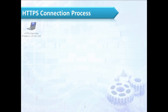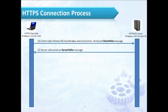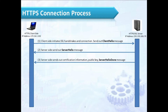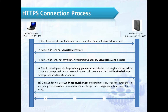Here, we can see the HTTPS connection process. First, the client side initiates an SSL handshake and sends out a client hello message. The server then sends a server hello message to inform the client that it is able to communicate, and then sends certificate information, a public key, and a server hello done message. The client will generate a private key, pre-master secret, and encrypt the public key sent by the server side. The client will then accommodate the private key in client key exchange, and finally send it back. The client and server will then exchange change cipher spec and finish messages. All further communication is encrypted.